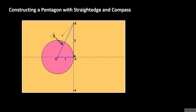We construct an arc centered at E and intersecting segment OE. Let G be the intersection between this arc and segment OE. Since the length of segment EG is 1, the length of segment OG is negative 1 plus the square root of 5. We need a quarter of this length to obtain cosine of 72 degrees, so we proceed to bisect segment OG.